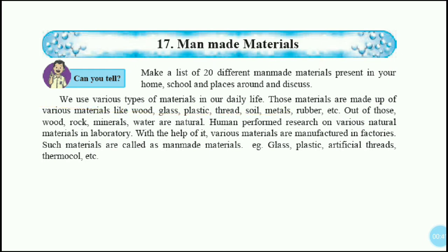We use various types of materials in our daily life, and those materials are made up of various substances — like wood, glass, plastic, thread, metals, utensils, rubber, rock. These are all natural resources. Wood and rock are called natural resources.